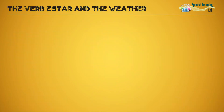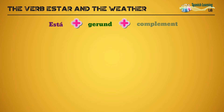We can also use the verb estar along with another verb in gerund form to describe a natural phenomenon in progress. First, we will place estar, then a verb in gerund, and finally we will add the complement, as in these examples.